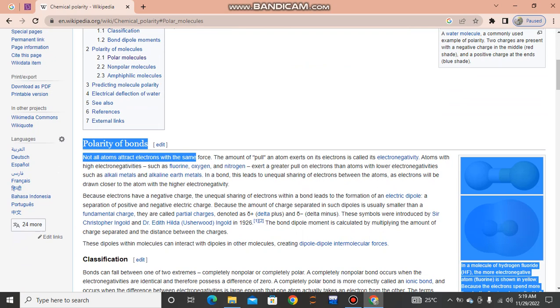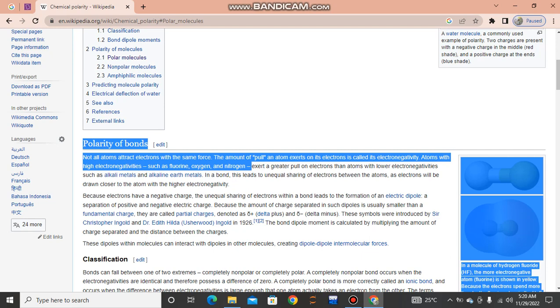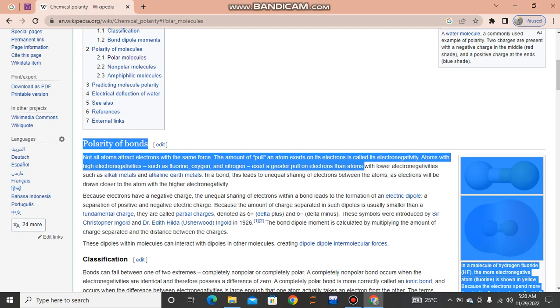Polarity of bonds: Not all atoms attract electrons with the same force. The amount of pull an atom exerts on its electrons is called electronegativity. Atoms with high electronegativity, such as fluorine, oxygen, and nitrogen, exert a greater pull on electrons than atoms with lower electronegativity such as the alkali metals and alkaline earth metals.